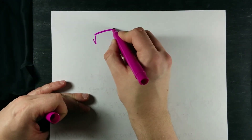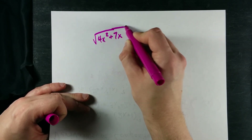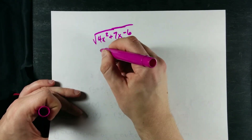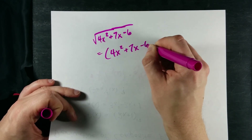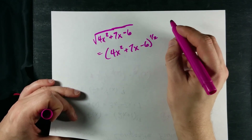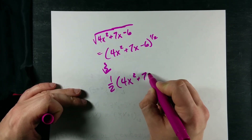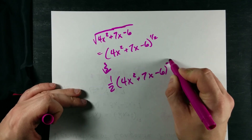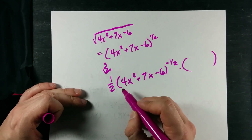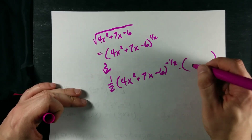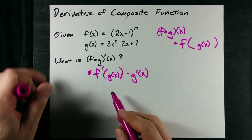If you really don't trust me, just remember that if I asked you to take the derivative of this, what would you do? Well, you'd probably go 4x squared plus 7x minus 6, all to the power of a half. And then when you take the derivative of that, you bring the half down, keep what's inside the brackets the same, notch the exponent down by 1, and multiply by the derivative of what's on the inside because it wasn't simply x.